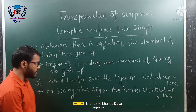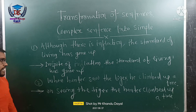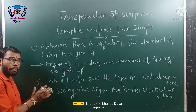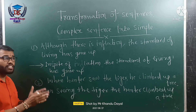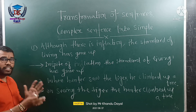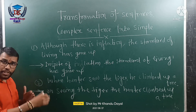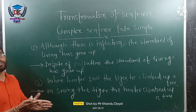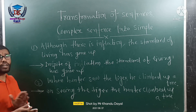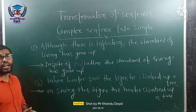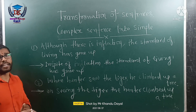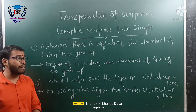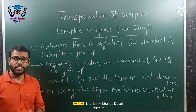What we have done in this sentence is that we have kept one principal clause as it is, and we have cut short the subordinate clause into a phrase by using the -ing participle — 'on seeing the tiger' — giving us: 'On seeing the tiger, the hunter climbed up a tree.'